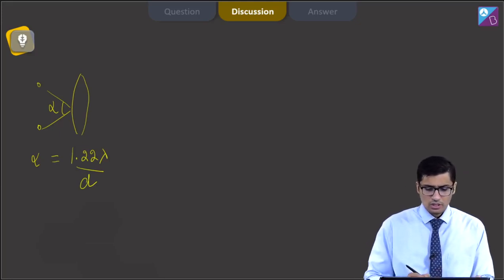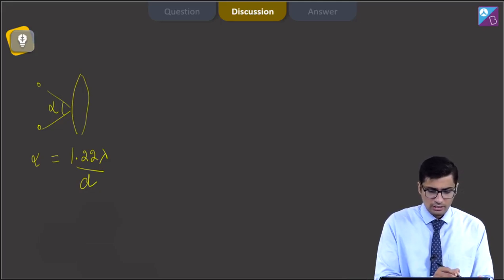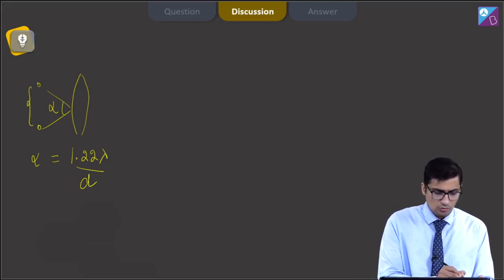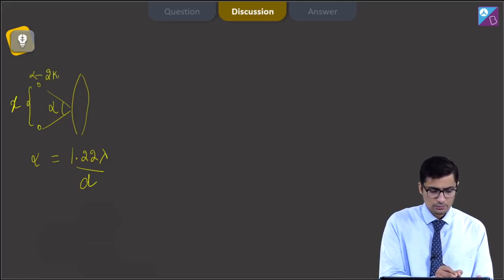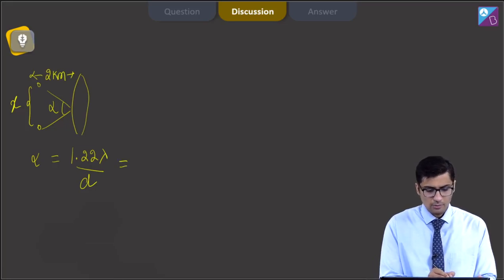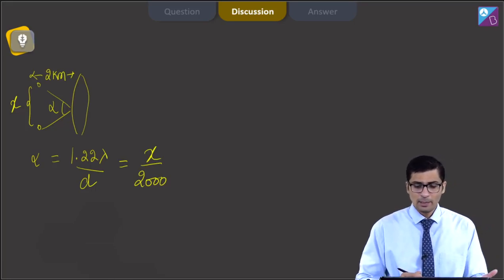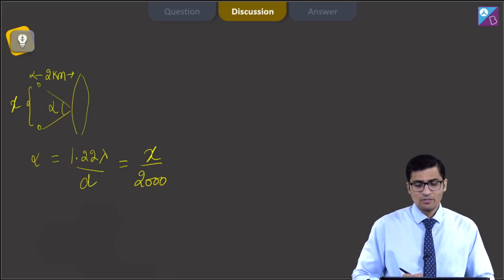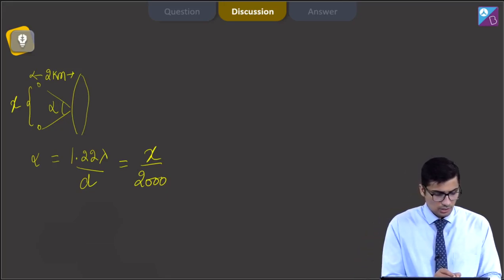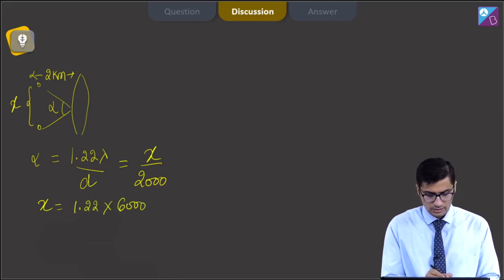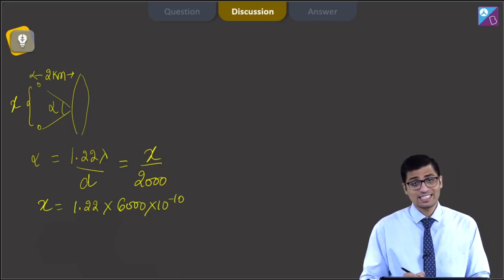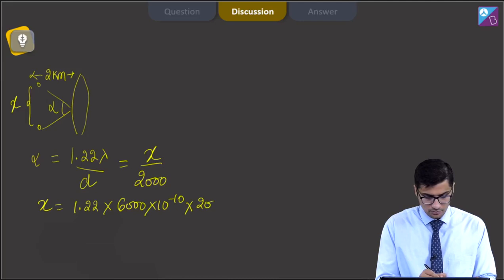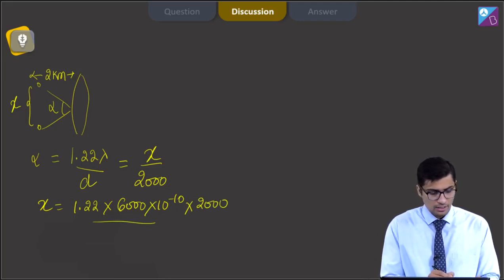As per the given question, the distance between the objects is an unknown value — let it be x — while the distance from the lens is 2 kilometers. Therefore, alpha equals x by 2,000. Substituting lambda = 6,000 angstrom (6,000 × 10⁻¹⁰ m) and D = 20 centimeter (20 × 10⁻² m), we get x = 1.22 × 6,000 × 10⁻¹⁰ × 2,000 divided by 20 × 10⁻² meters.